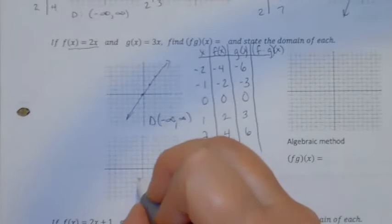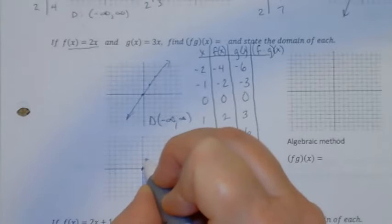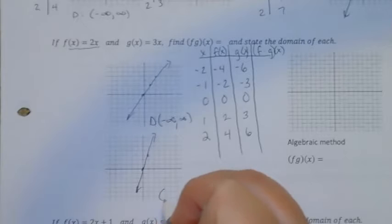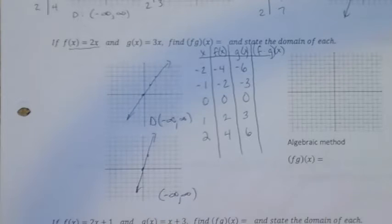The other one, y equals 3x, looks like this. It also has a domain of negative infinity to infinity.